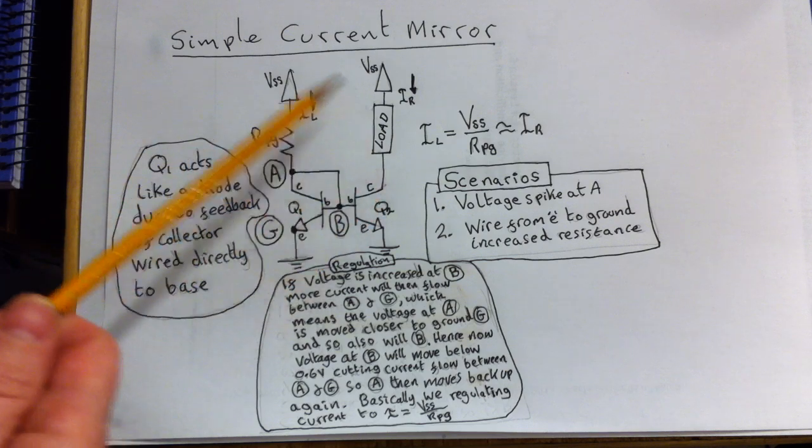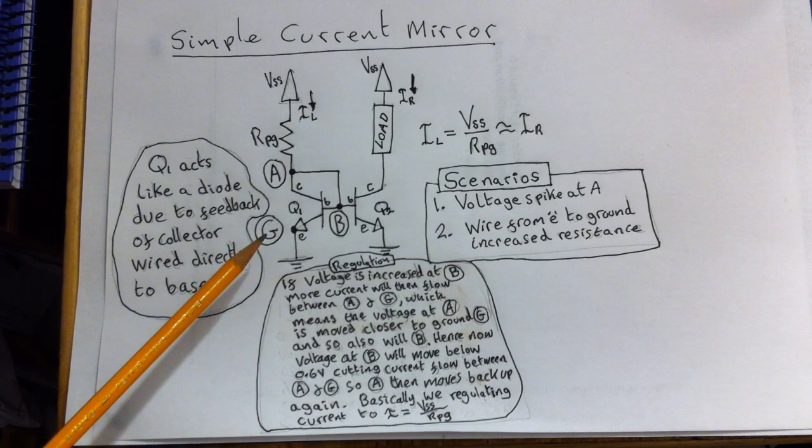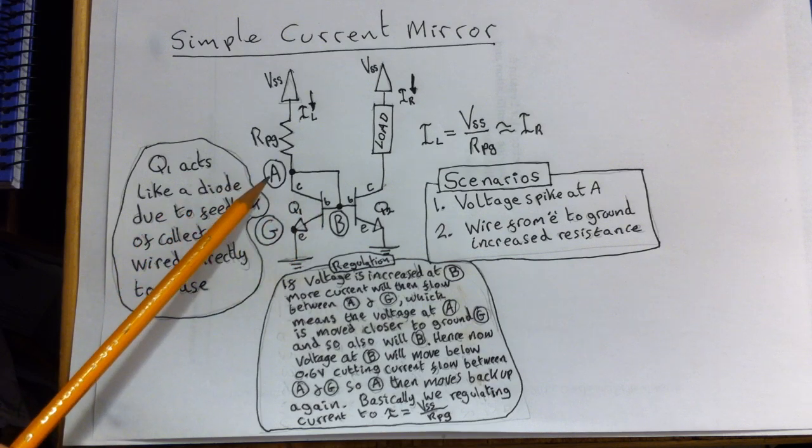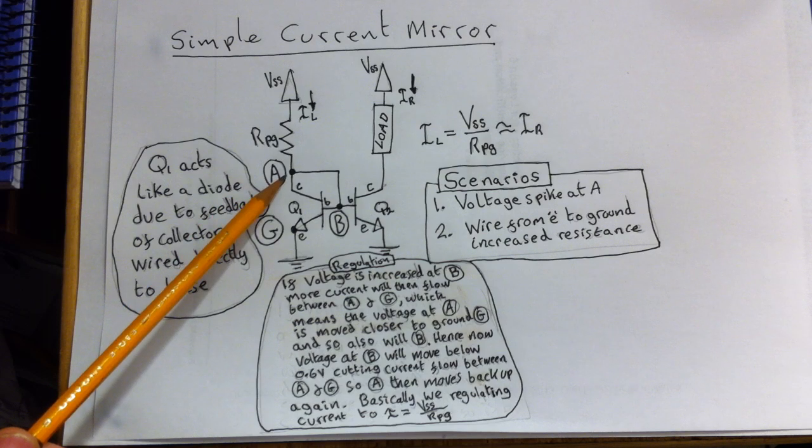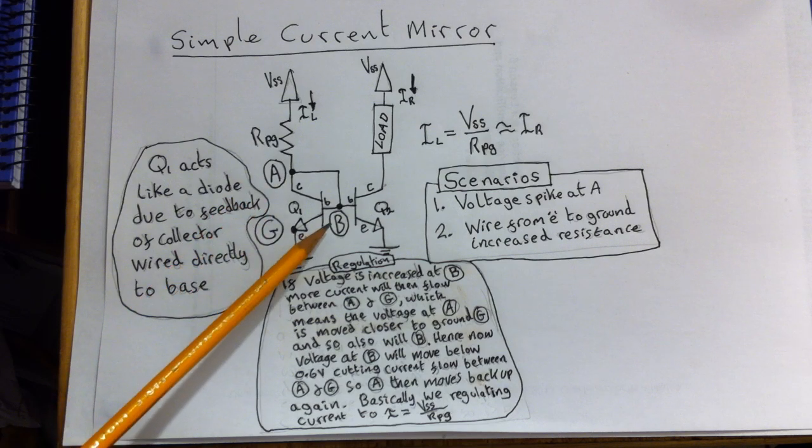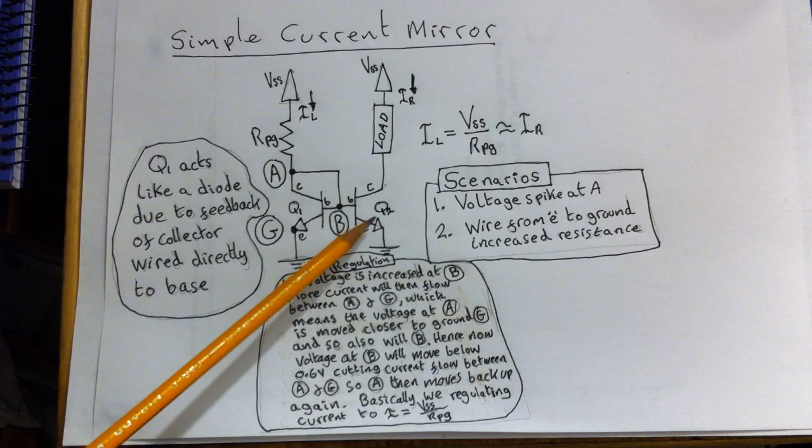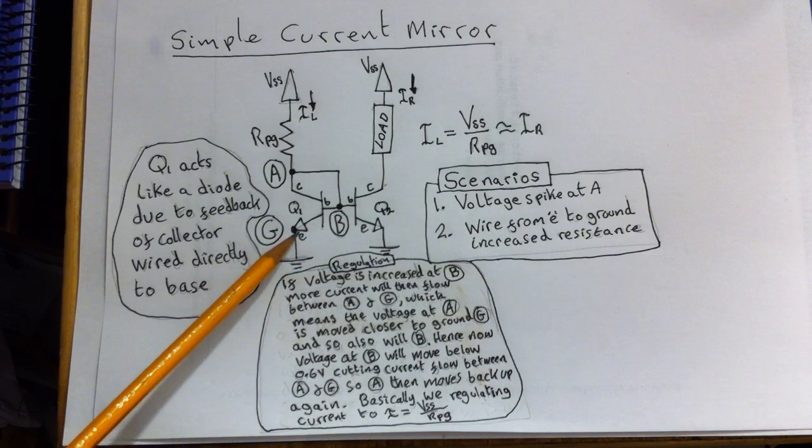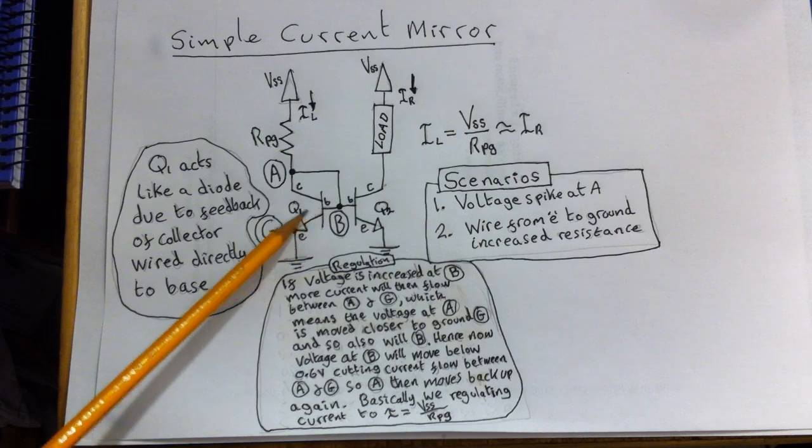So this circuit here is a very simple current mirror. I've labeled in some points here. Point A, which is the collector of Q1. B, the base of Q1 and the base of Q2. And G, which is the ground part of the emitter from Q1.